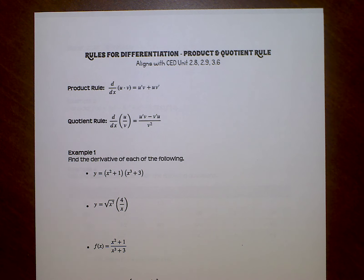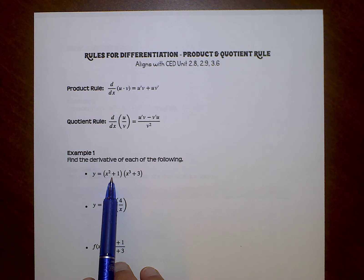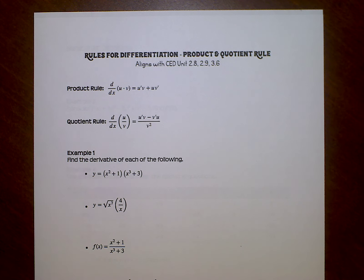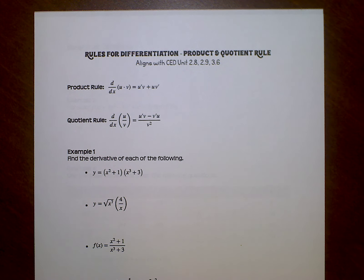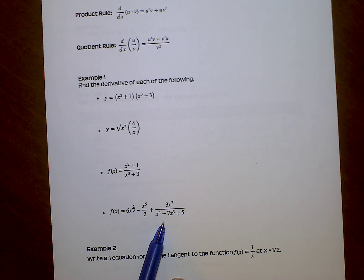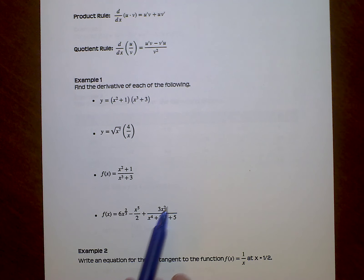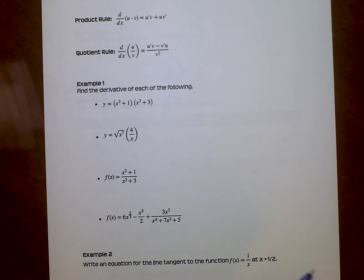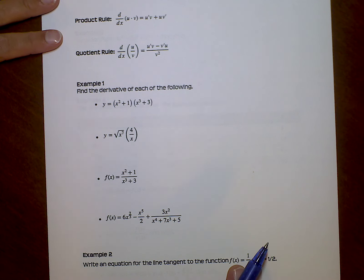And sometimes we can get around that. Using this same example here, I could get around this problem by just foiling it out and then using the methods we've been doing. But we are definitely going to run into some — like this guy down here, this very last one — where there's no amount of simplifying that is going to turn this into something I can actually work with. So we have to use these sometimes.